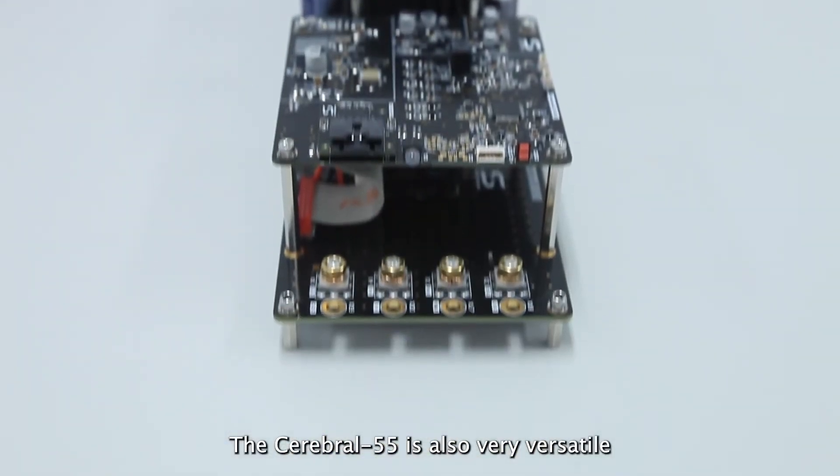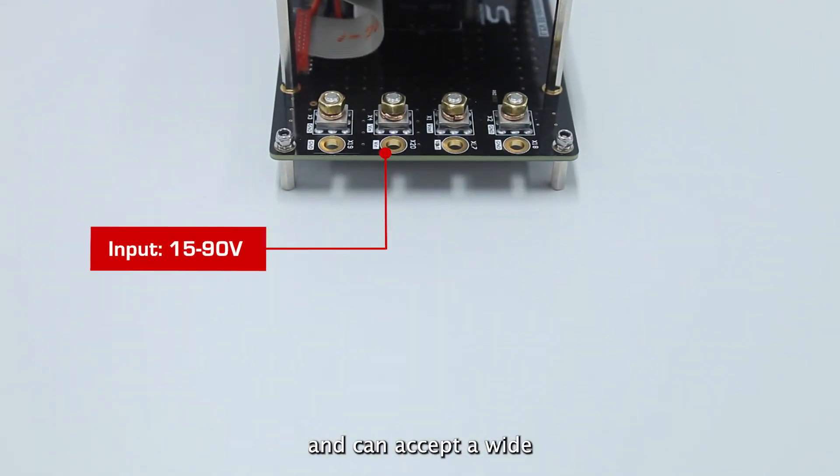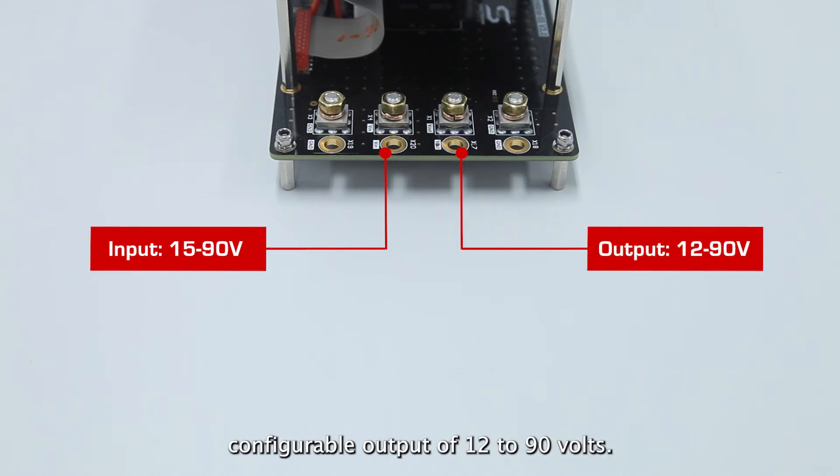The Cerebro 55 is also very versatile and can accept a wide input range of 15-90V while producing a user configurable output of 12-90V.